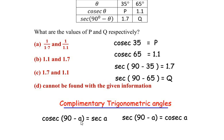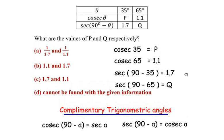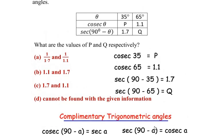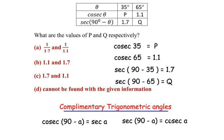Here cosec of 90 minus a, where a is an angle, will be equal to secant a, or secant of 90 minus angle a will be equal to cosec of a. Now in the given table we have the second relationship, that is secant of 90 minus theta. So we are going to consider the second relationship and find out the values of P and Q.